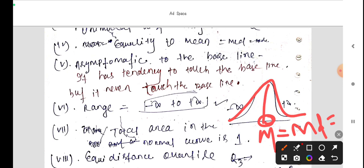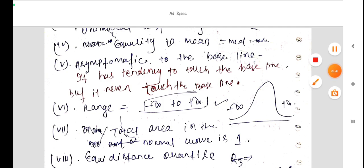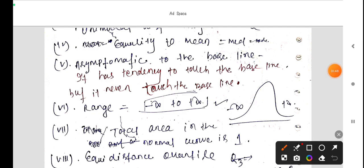Asymptotic to the baseline. It has tendency to touch the baseline, but it never touches the baseline. It looks like it touches the baseline, but it does not touch the baseline. That is why this is asymptotic to the baseline.